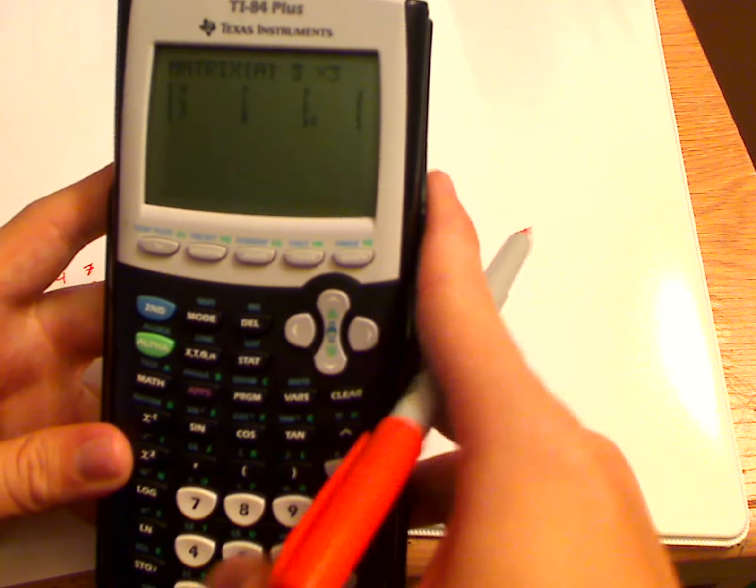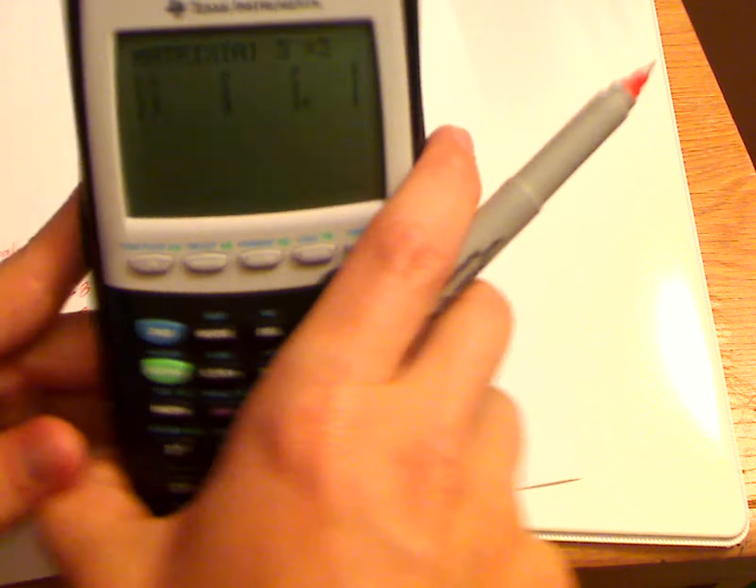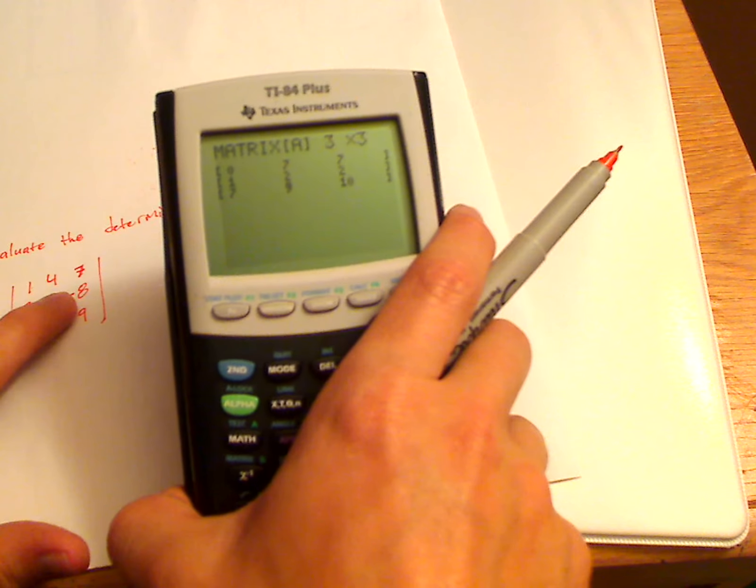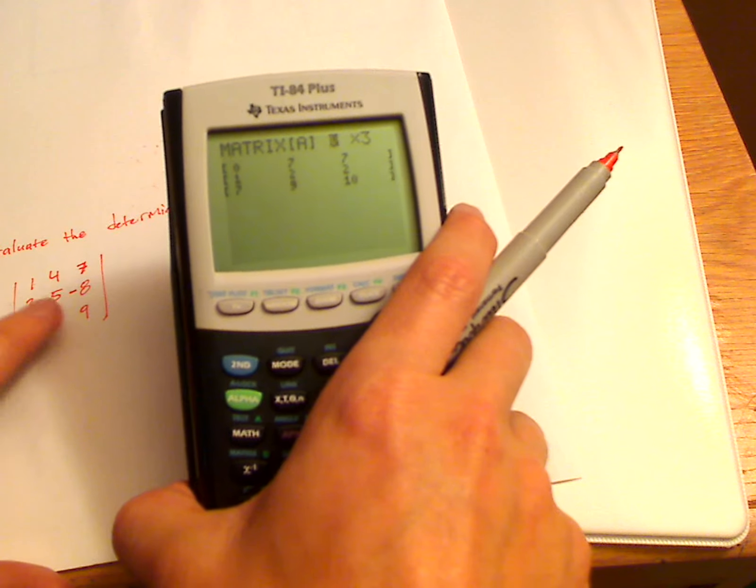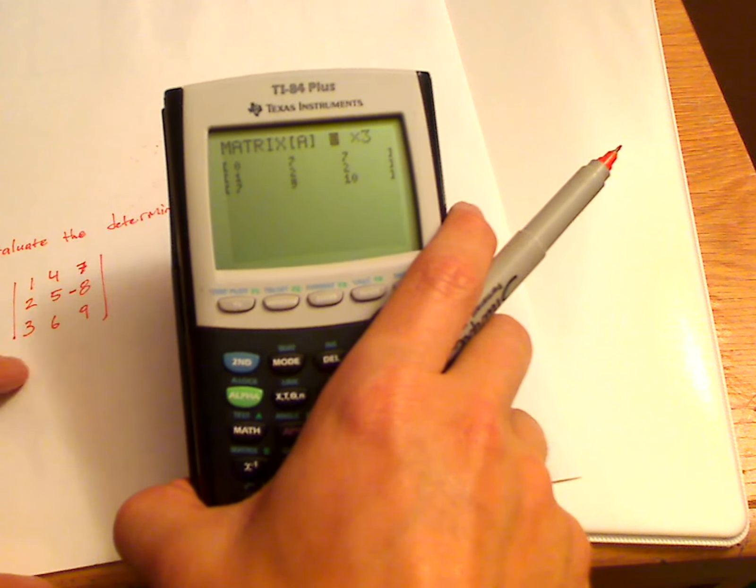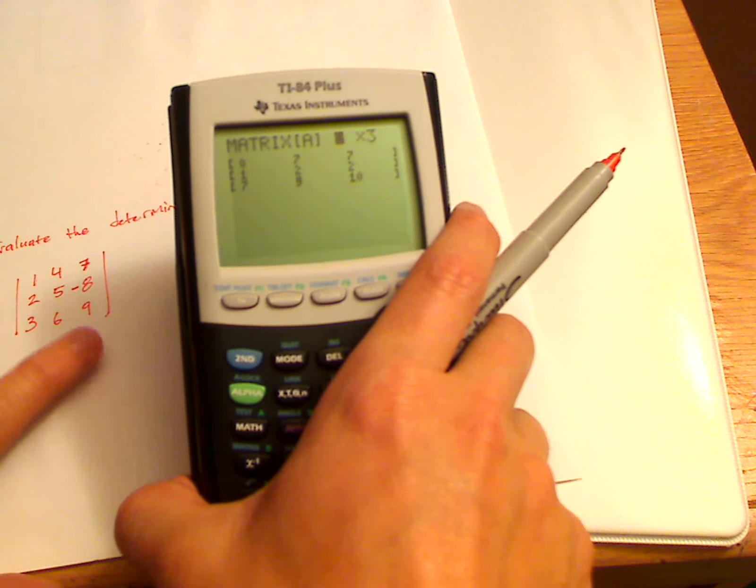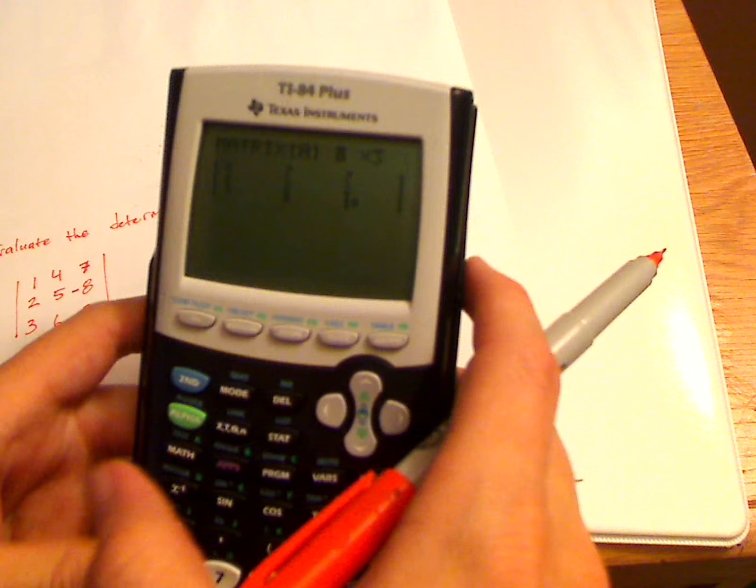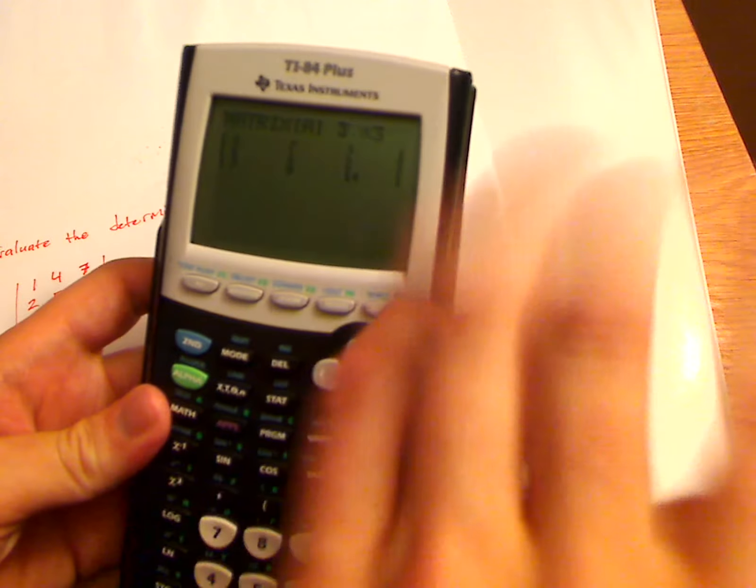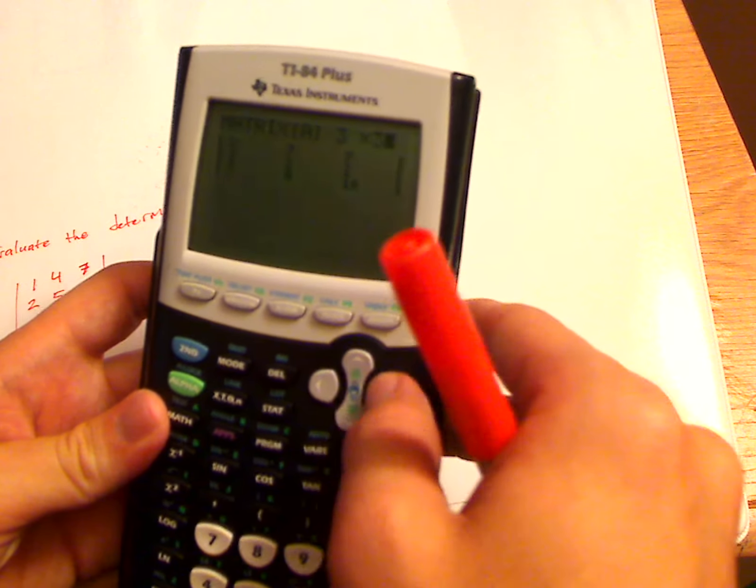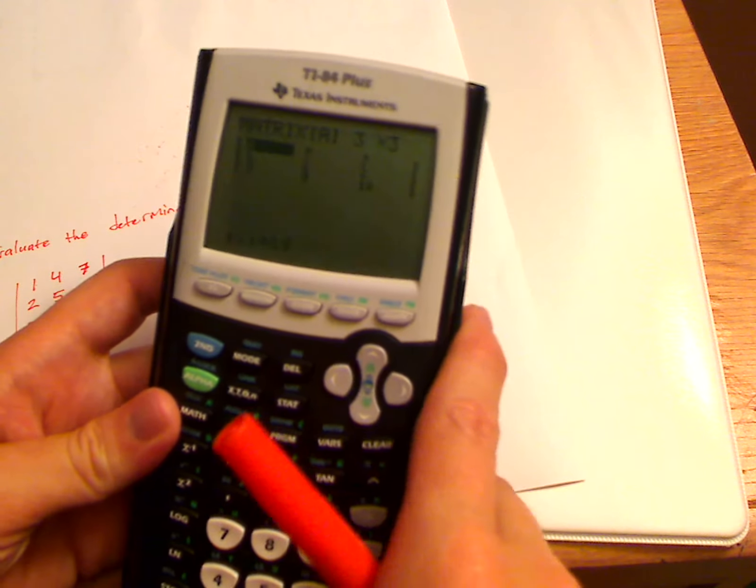Back to the problem. The problem was 1, 4, 7, 2, 5, negative 8, and then 3, 6, 9. Simply type that in—when you type it in, it's going to go across.